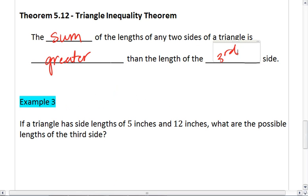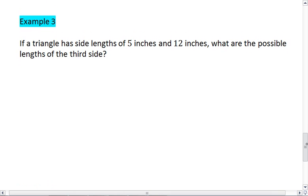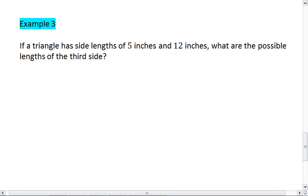Let's look at some examples. Example 1, if a triangle has side lengths of 5 inches and 12 inches, what are the possible lengths of the third side? Go ahead and try to figure this one out for yourself first. When you're ready, go ahead and resume the videos and see the solution.